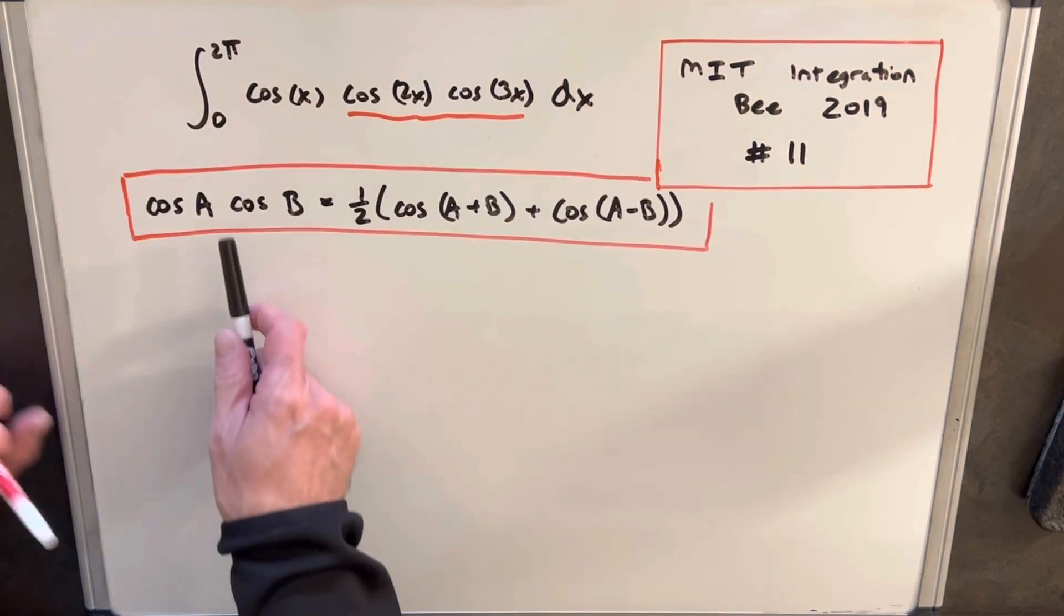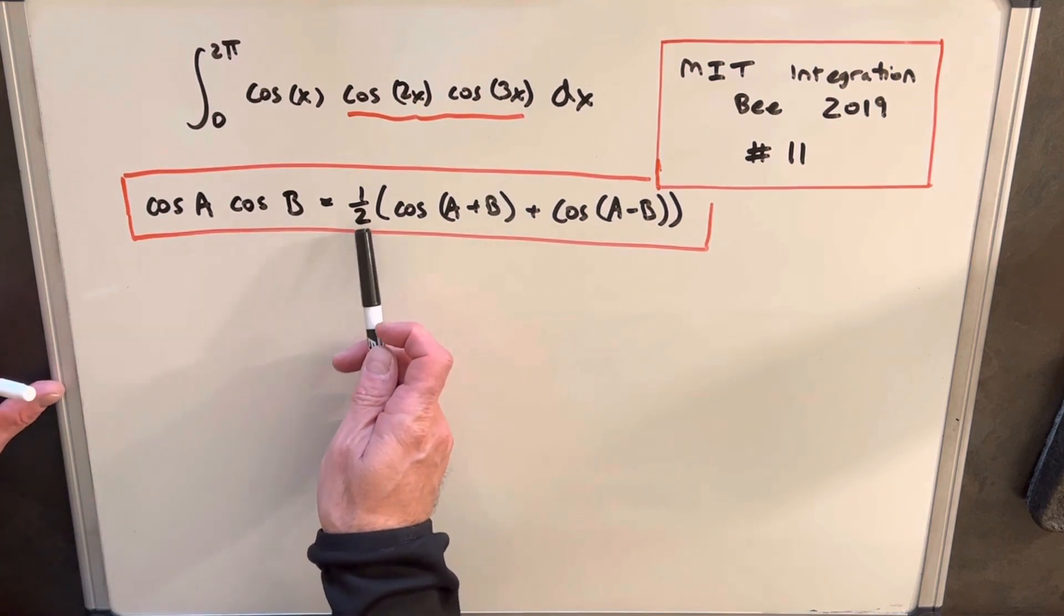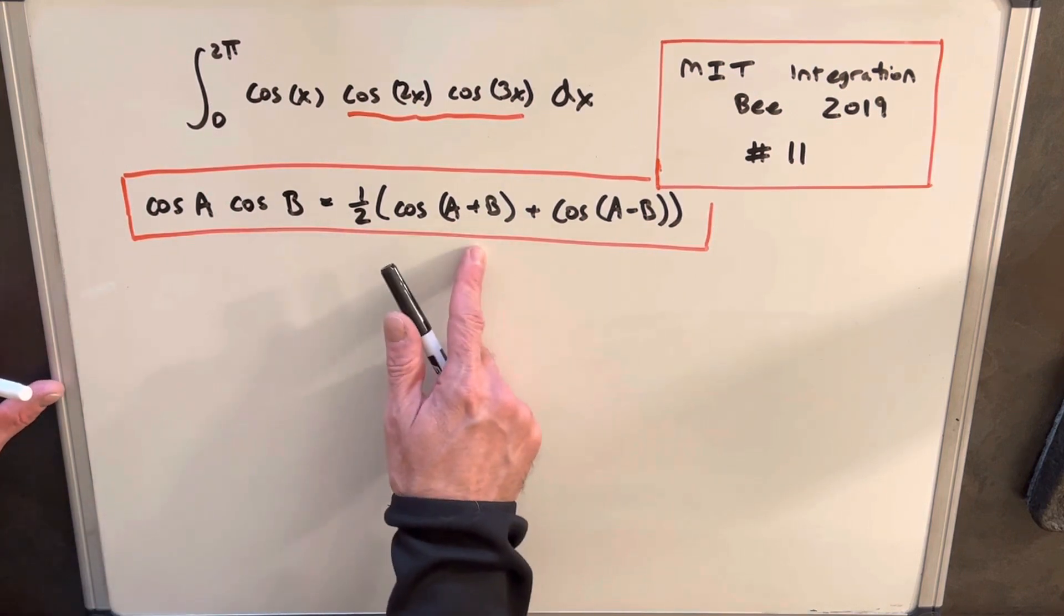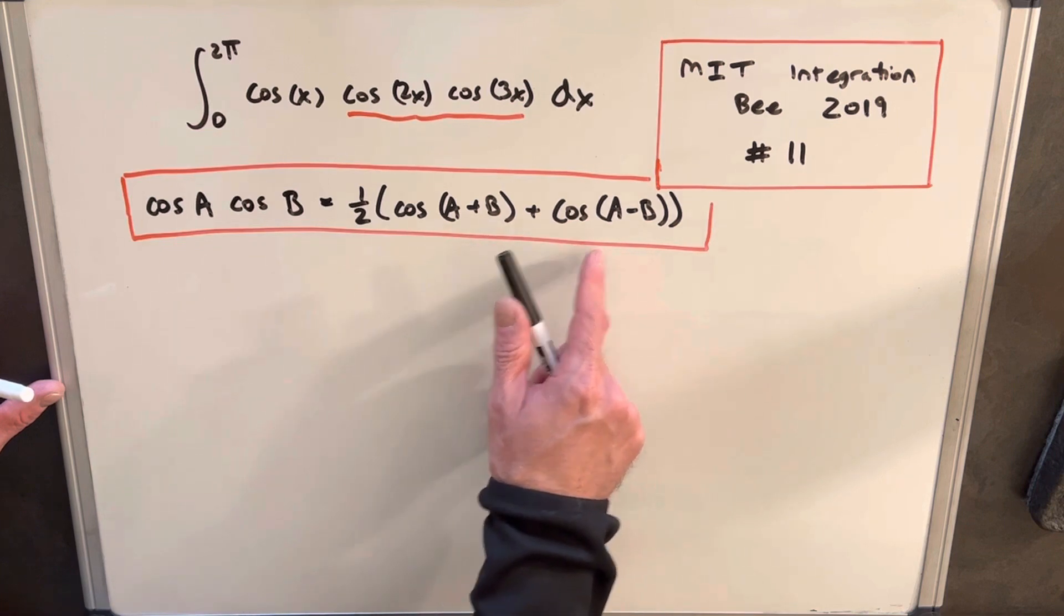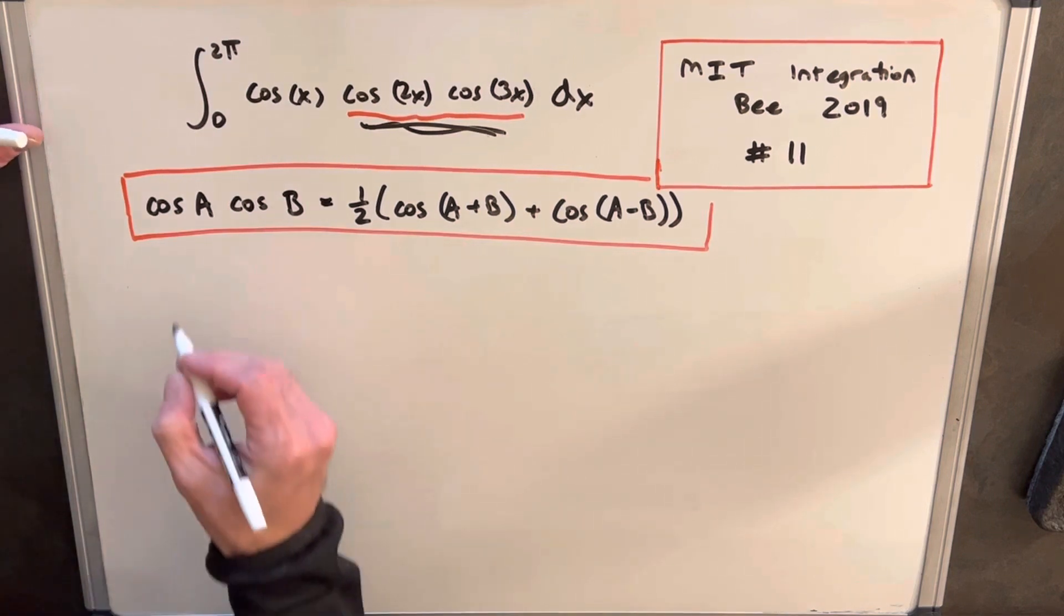Okay, so here's the formula we're going to use when we have two different angles, a and b. We just can take out a half, and then we have the sum of the two angles plus cos of the difference of two angles. To start with, let's apply this formula on the cos 2x, cos 3x part.